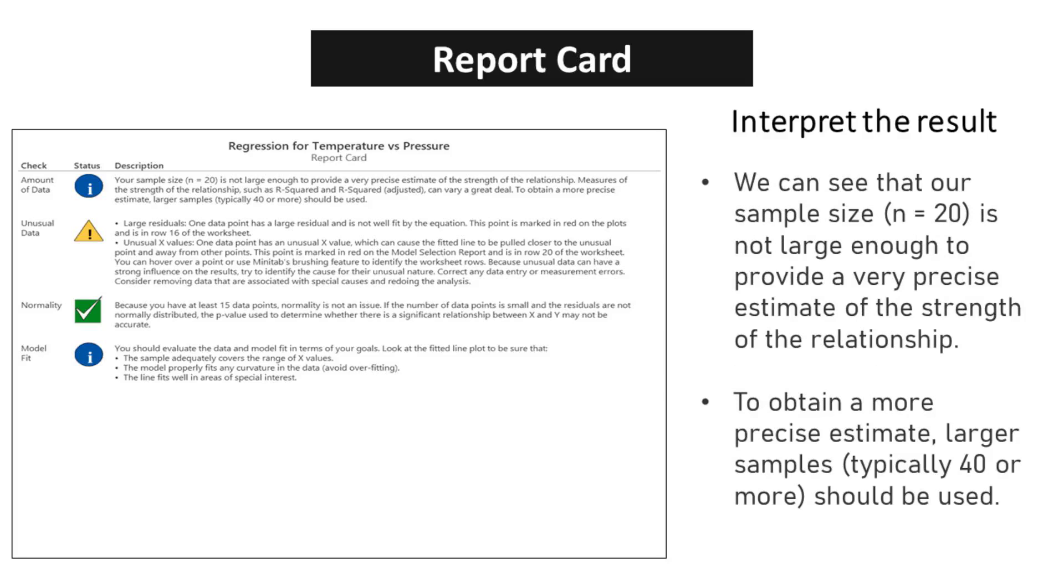We can see that our sample size, n equals 20, is not large enough to provide a very precise estimate of the strength of the relationship. To obtain a more precise estimate, larger samples, typically 40 or more, should be used. By increasing the sample size, we can enhance the precision of our estimates and ensure that our findings are more representative of the population we are studying.